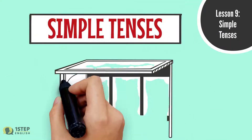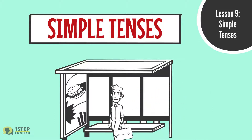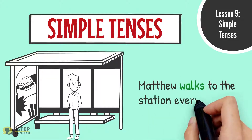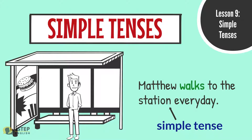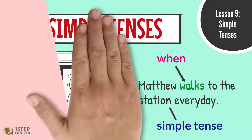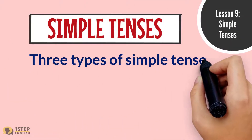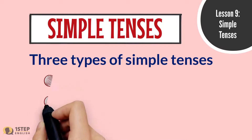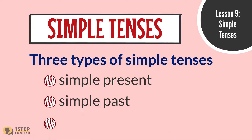For example: 'Matthew walks to the station every day.' This sentence is an example of a simple tense. It tells us when the action took place. There are three types of simple tenses: simple present, simple past, and simple future.